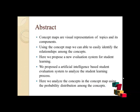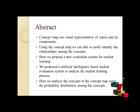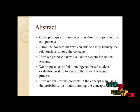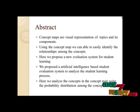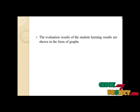Here we propose a new evaluation system for student learning — an artificial intelligence based student evaluation system to analyze the student learning process. We analyze concepts in the concept map using probability distribution among the concepts, and define the concept map in the form of a question-answer format. After the teacher teaches the students, questions are prepared on that particular subject. The student goes through the topics and takes the exam. Based on the results, we predict the type of teaching suitable for that student. Evaluation results are also shown in the form of a graph, representing how much students improved after teaching.